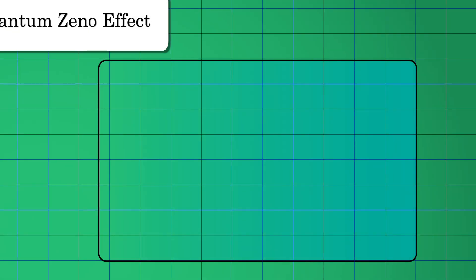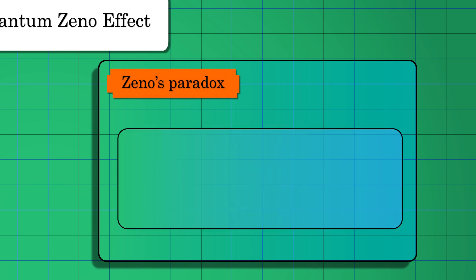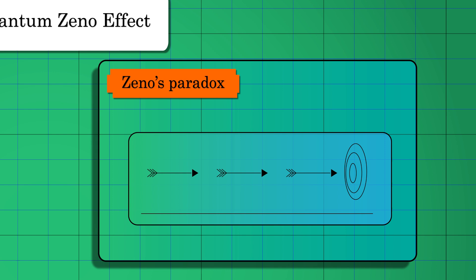This weird phenomenon is known as the Quantum Zeno Paradox. Zeno's paradox says that since an arrow in flight is not moving during any single instant of time, it cannot possibly be moving at all. Therefore, the very act of observing the moving arrow should freeze it.